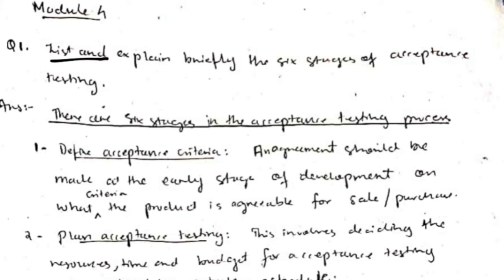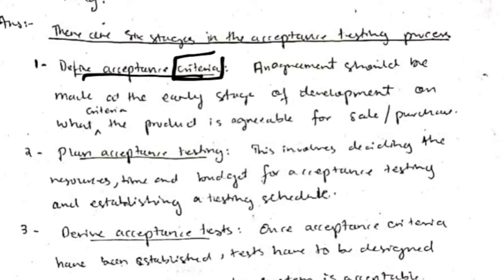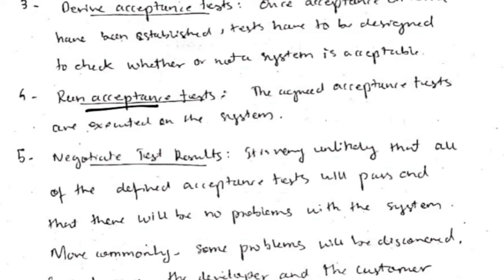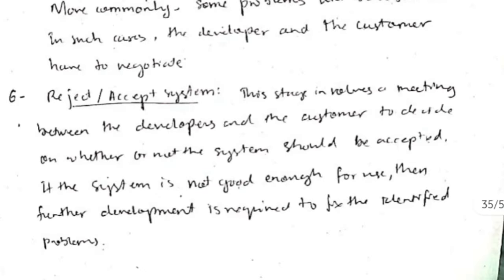Acceptance testing: after the developers make a product, it is shown to the customer who can accept or reject it. The six stages are: define acceptance criteria — on what basis will the product be accepted or rejected; plan acceptance testing — what is needed, when, where, and how testing will be carried out; derive acceptance tests; run those tests; check if the product passes or fails; and negotiation — since it's unlikely the product is 100% efficient, the customer decides whether to accept or reject.